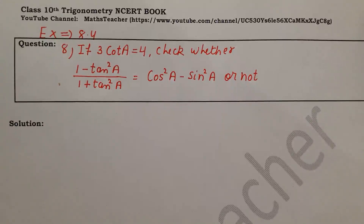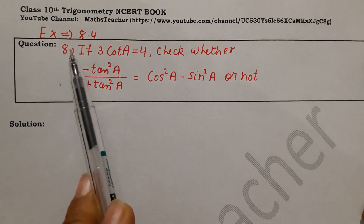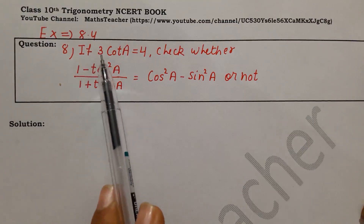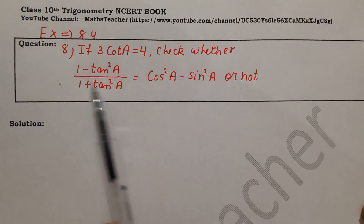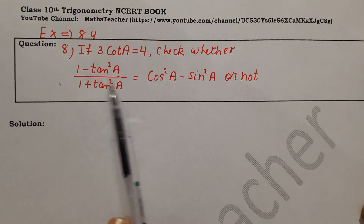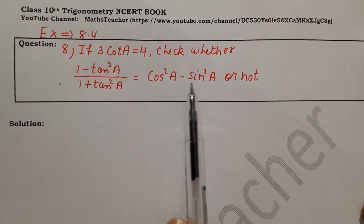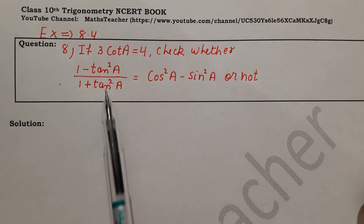Hello viewers, welcome to my channel. I'm Rashmi, your maths teacher. Today we are doing question number 8 from exercise 8.4. The question is: if 3 cot A equals 4, check whether (1 minus tan² A) divided by (1 plus tan² A) equals cos² A minus sin² A or not.